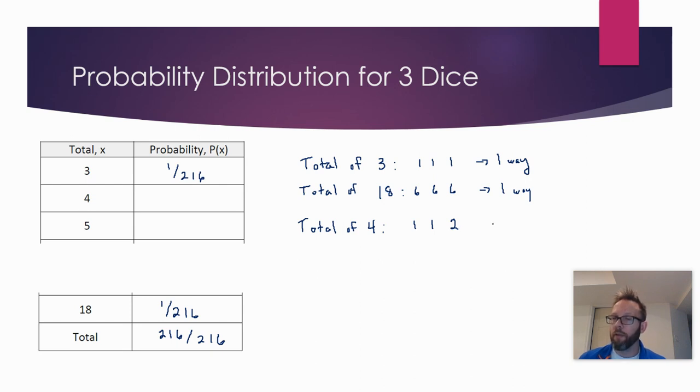So if we use our organized counting methods, how can you arrange two ones and a two? There's three numbers, so three factorial, divided by repeating ones. There's three ways to order these guys. So there's a three out of 216 chance of getting a total of four. I'm going to do a little bonus one with you guys, 17. This is going to illustrate a property that will cut your work in half.